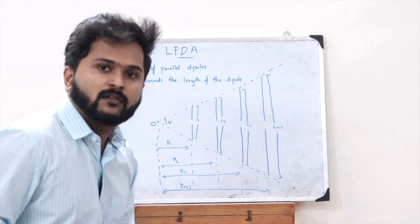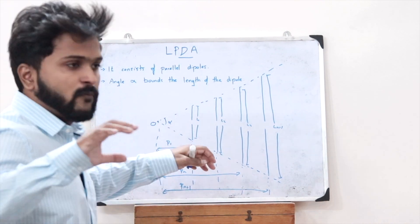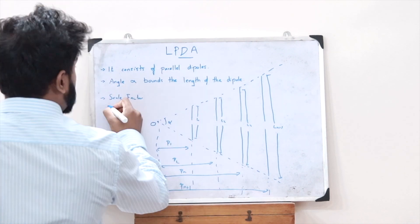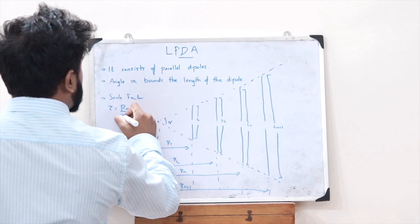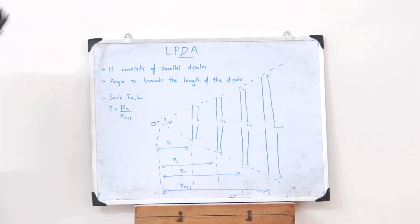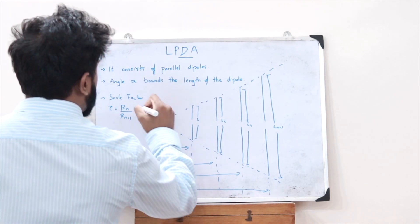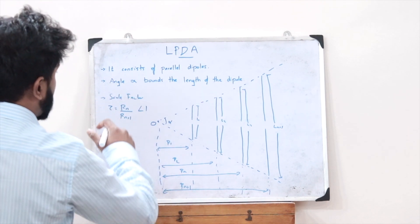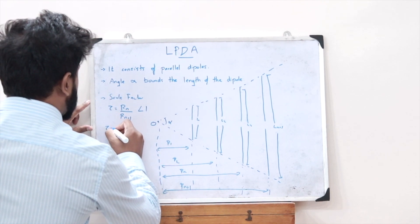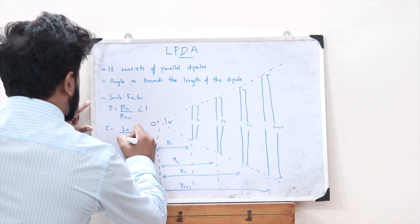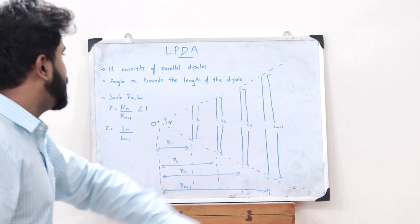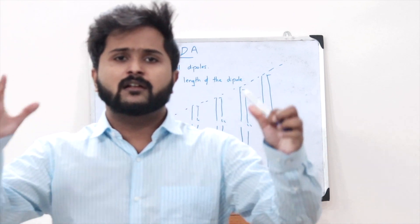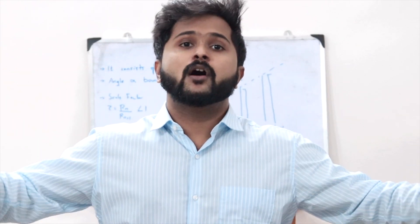One important factor to keep in mind is the scale factor, tau. The scale factor is given as tau = Rn / R(n+1), and it must be less than 1. It can also be written as tau = Ln / L(n+1), that is, in terms of the lengths of the individual dipoles.